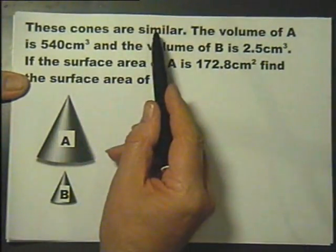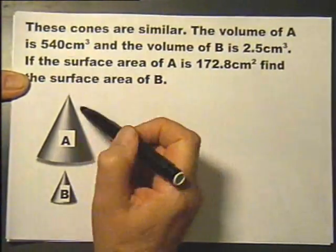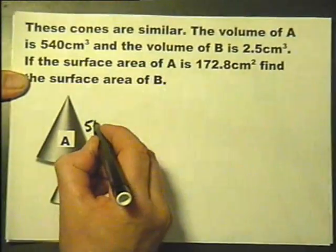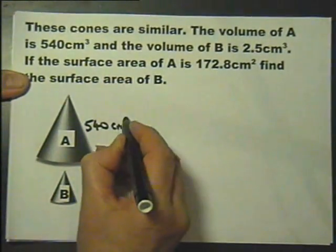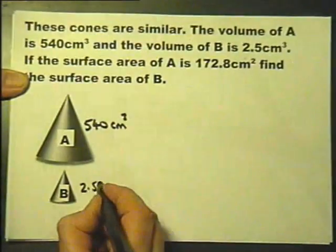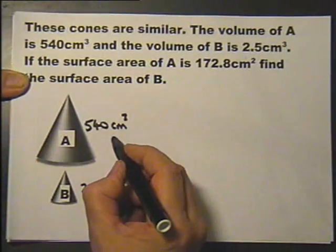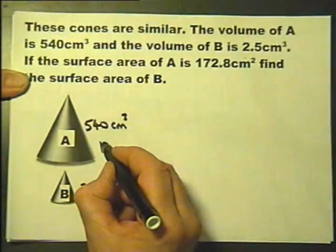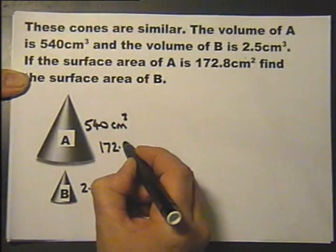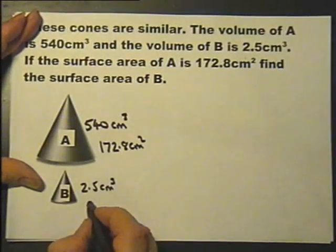These cones are similar. In other words, one's a perfect enlargement of the other one. The volume of A is 540 cubic centimeters. The volume of B is 2.5 cubic centimeters. The surface area of A is 172.8 square centimeters. Find the surface area of B.